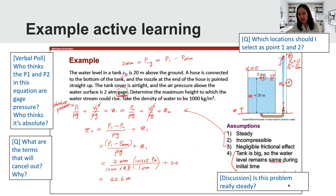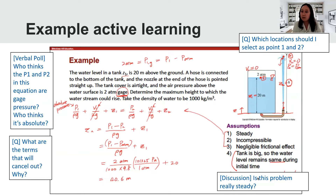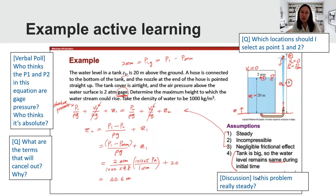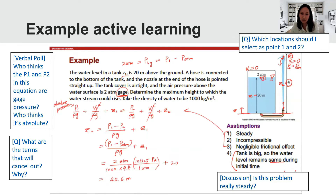When dealing with terms cancelling due to assumptions, I always wait for students to think about it first and ask what terms they think will cancel. After doing all the analysis, I may have a reflection question — for example, we assumed the problem was steady and solved it on that assumption, but is it actually steady, and is this assumption only valid for a certain time point? These are good wrap-up questions. I wouldn't implement all of these for one topic, but there are different forms of active engagement you can implement when delivering a concept, theory, and example problem.